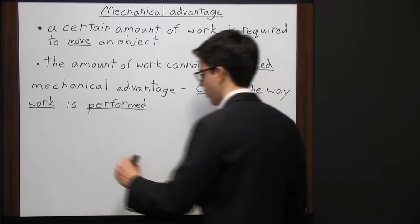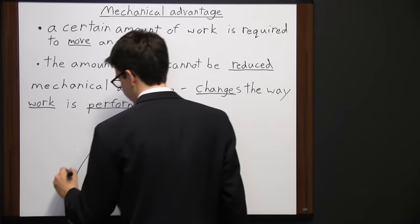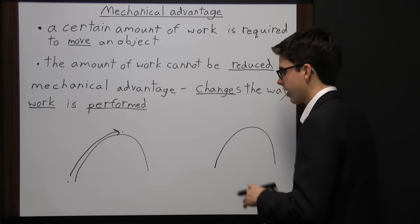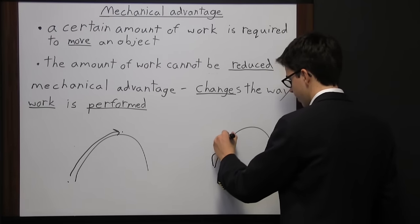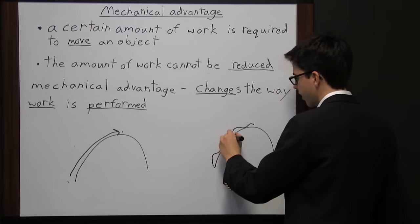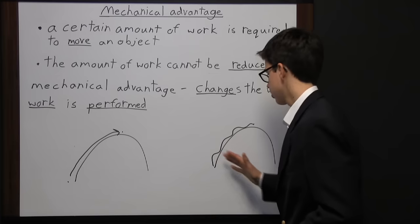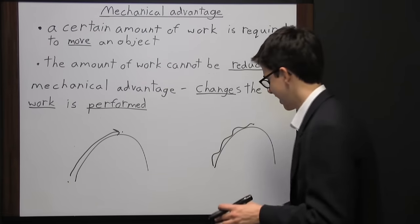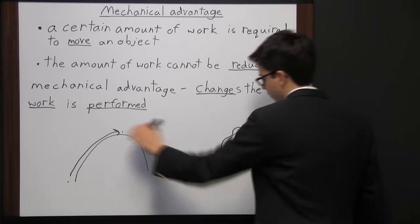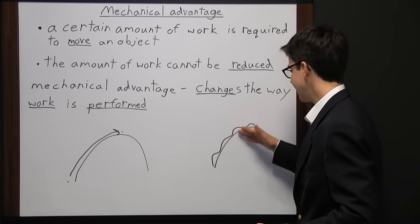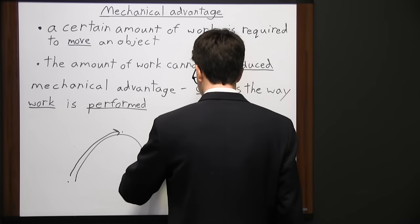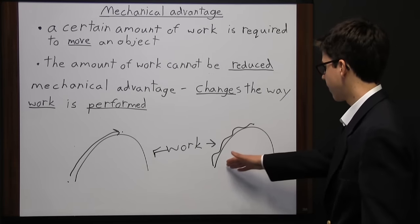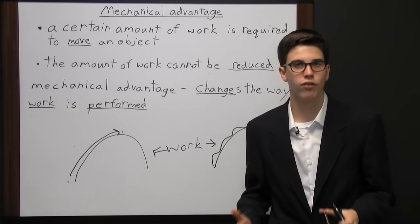A great example is walking up a hill. Someone can take a direct, steep route to the top — not far, but very hard. Someone else could take a longer, meandering route up the hill at an angle, increasing in elevation slowly. It requires a lot less effort because they're not gaining elevation as quickly, but they have to walk much farther. The same amount of work is required for both, but mechanical advantage makes it easier for the person taking the angled route.